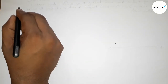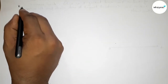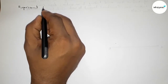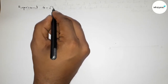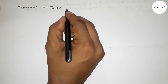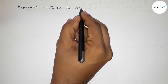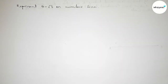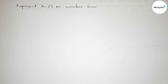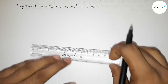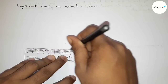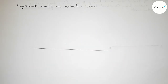Hi everyone, welcome to Essay Stair Classes. Today in this video we have to represent 4 minus root 3 on a number line in an easy way. So let's start the video. First of all, we have to construct a number line, so first drawing here a line of any length.